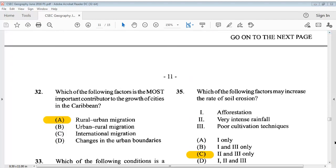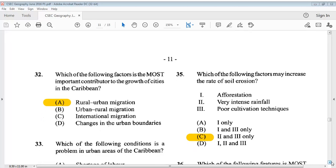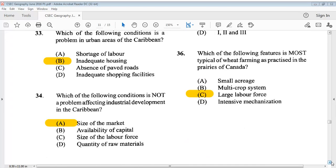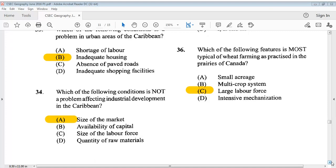Question 35: Which of the following factors may increase the rate of soil erosion? 1, afforestation. 2, very intense rainfall. 3, poor cultivation techniques. The answer is C, 2 and 3 only. Question 36 says, which of the following features is most typical of wheat farming as practiced in the prairies of Canada? The answer is C, large labor force.